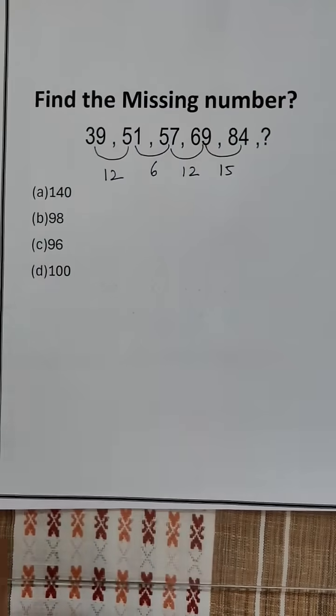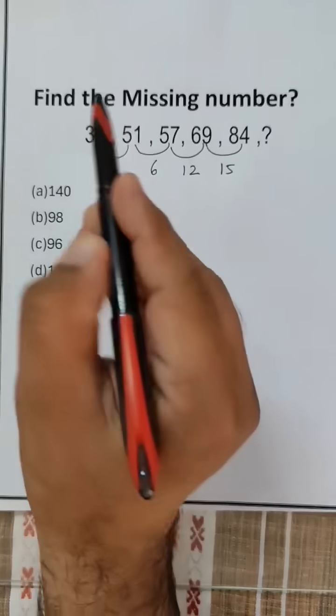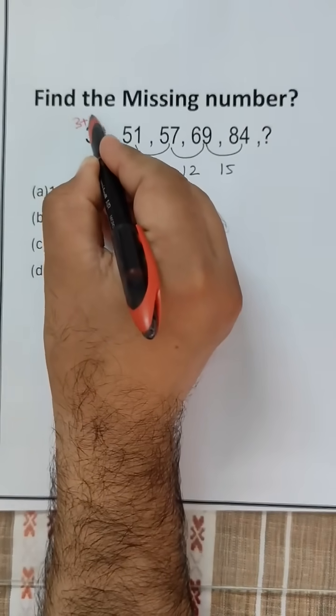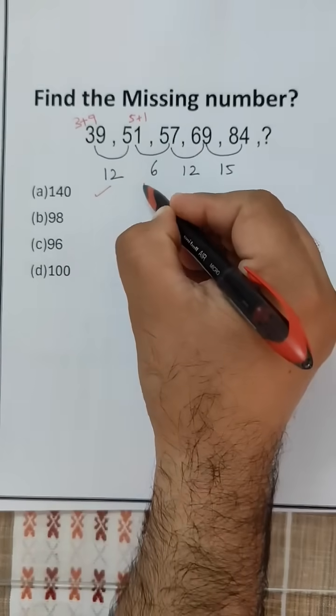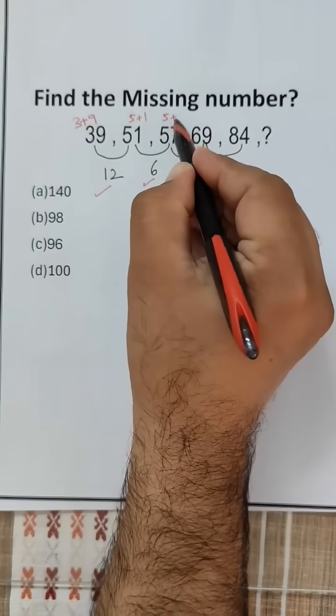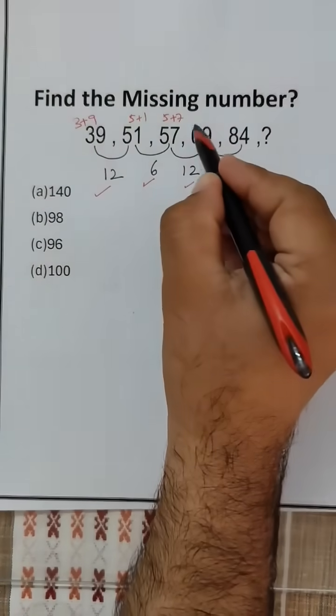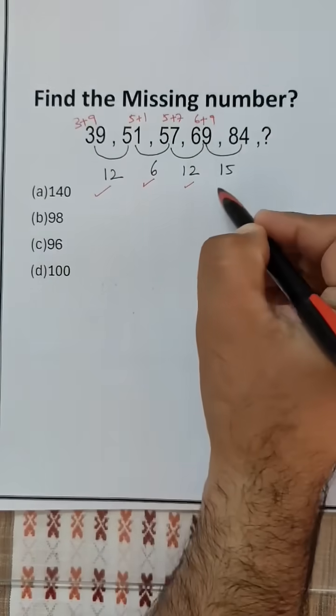Now we notice that the sum of digits: 3 plus 9 is 12, 5 plus 1 is 6, 5 plus 7 is 12, 6 plus 9 is 15.